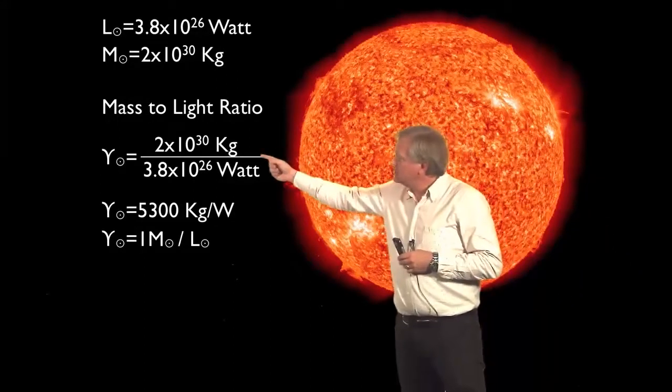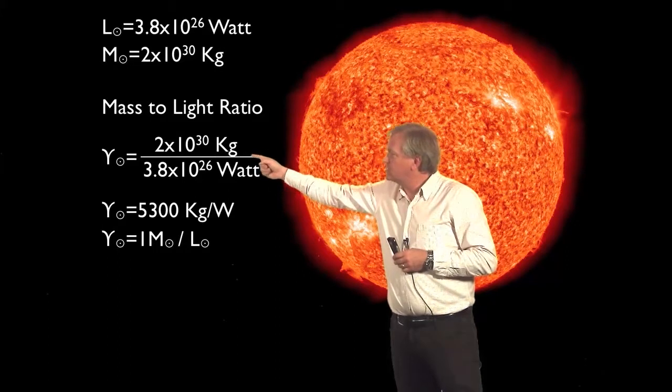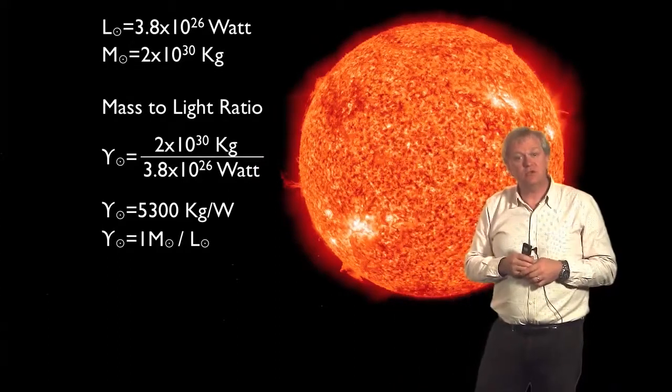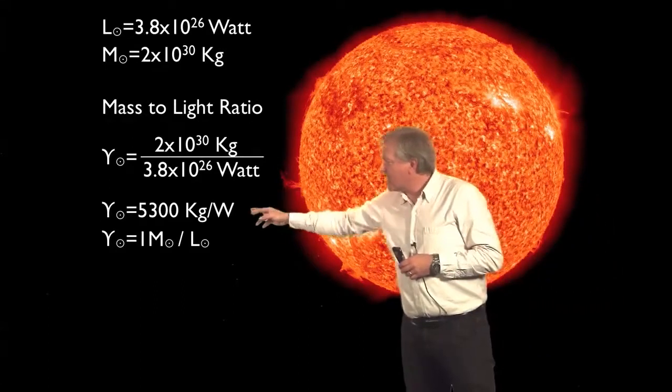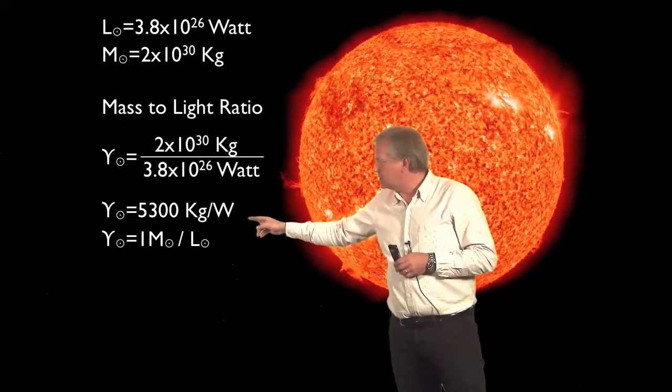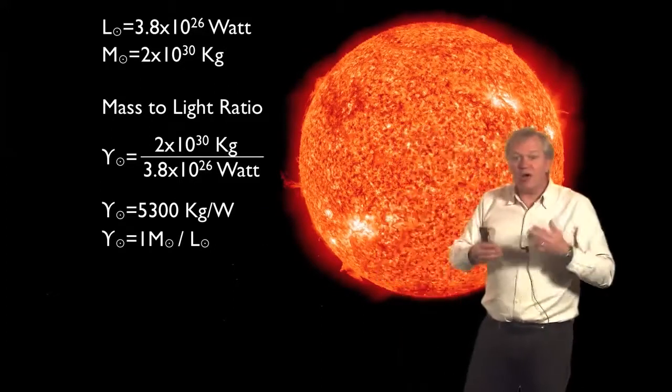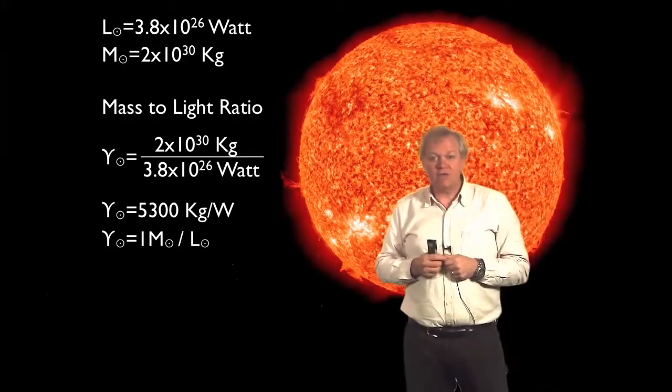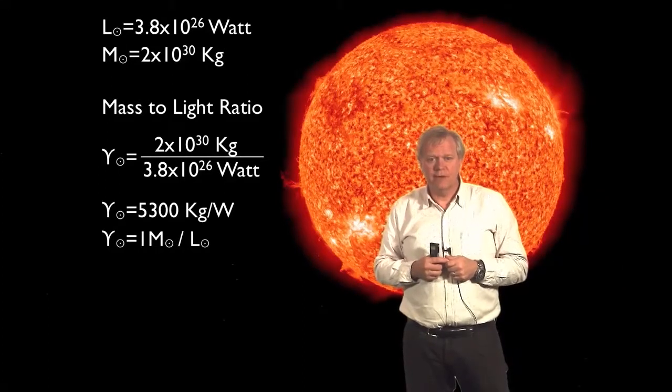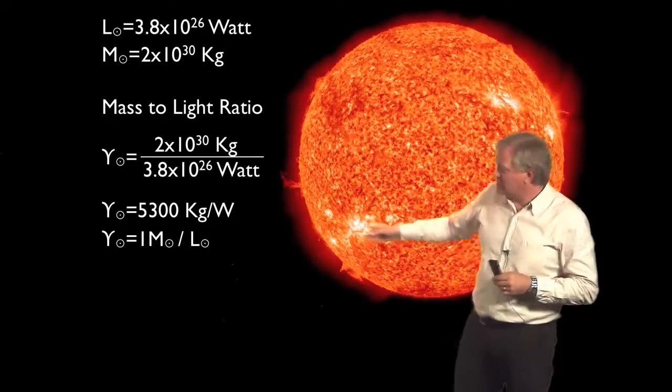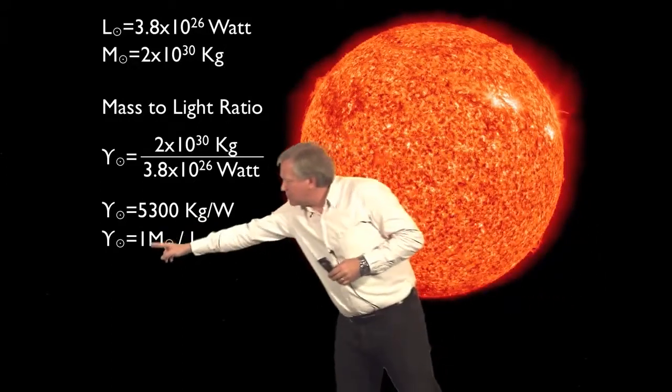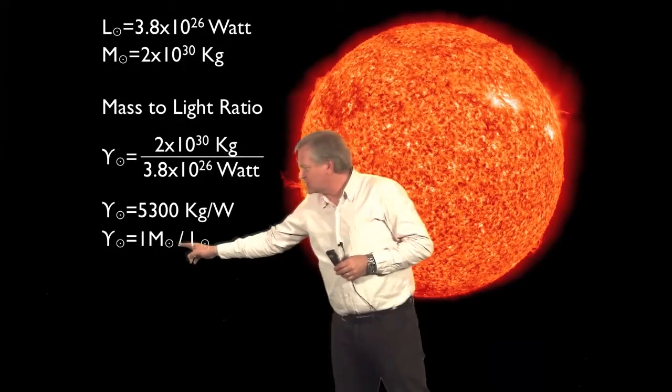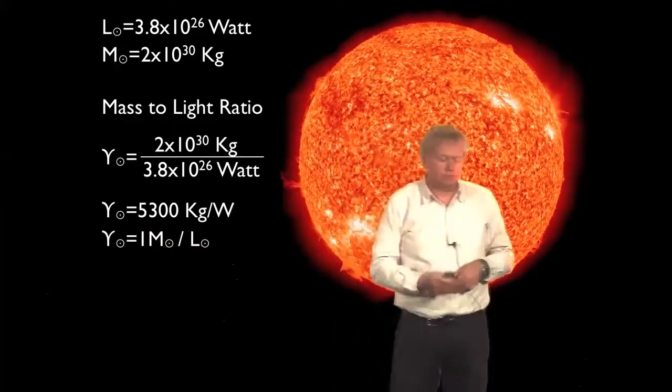For the sun, that ratio is 2 times 10 to the 30 kilograms divided by 3.8 times 10 to the 26 watts, or about 5,300 kilograms per watt. That would mean wherever I saw a watt of starlight in a galaxy, I would know I would have 5,300 kilograms. To make this even simpler, we can define this mass-to-light ratio as 1 solar mass per solar luminosity. That's nice because that number is 1 for the sun.